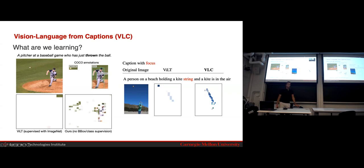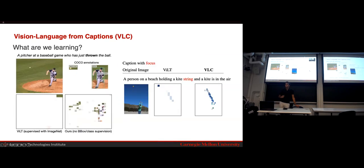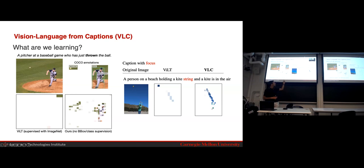VLC was trained from a pre-trained MAE and then text was added. It's not a one-to-one metaphor, but the point is that ViLT's attention is influenced by the ImageNet kite label — it may have identified that patch largely because of the kite class being present.